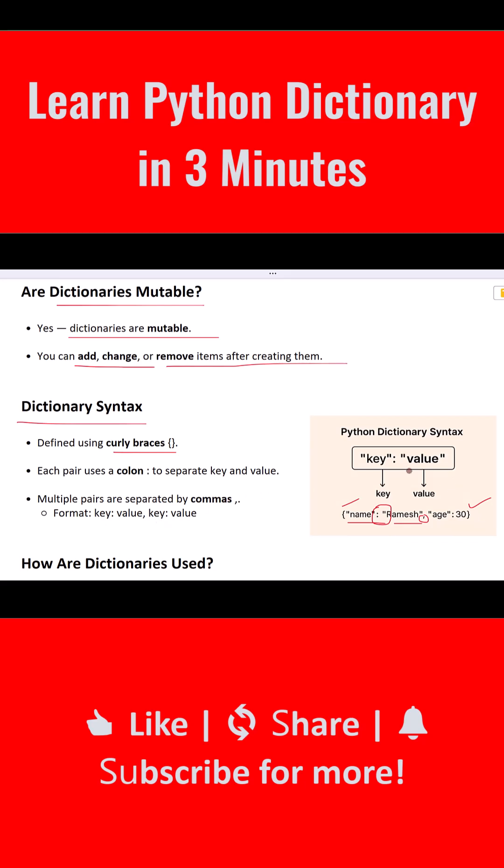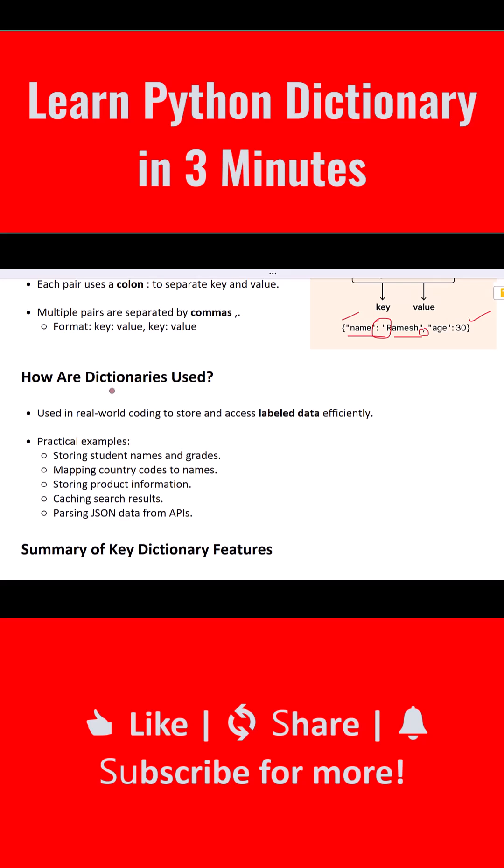Now, how are dictionaries used? Dictionaries are everywhere. They're perfect when you want to look up information based on a label. For example, storing student names and their grades, mapping country codes to country names, saving product details, caching search results, and even storing JSON data from APIs.